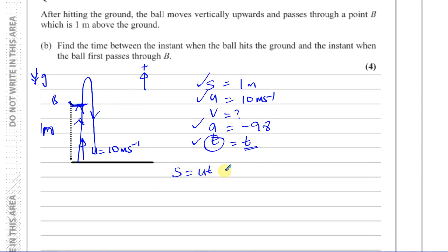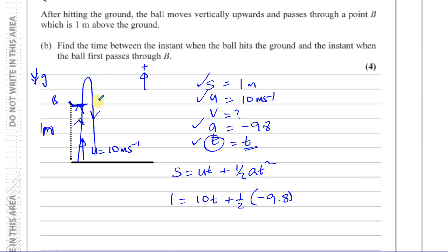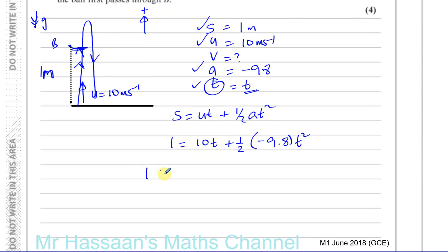We need an equation with S, U, A, and T, which is S = UT + ½AT². So: 1 = 10T + ½ × (−9.8) × T², giving 1 = 10T − 4.9T². Rearranging, we get the quadratic: 4.9T² − 10T + 1 = 0.